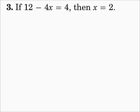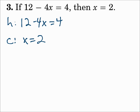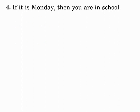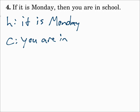Number three: if 12 minus 4x equals 4, then x equals 2. The hypothesis: 12 minus 4x equals 4. The conclusion: x equals 2. Number four: if it is Monday, then you are in school. The hypothesis: it is Monday. The conclusion: you are in school. Remember, 'if' is not a part of the hypothesis, and 'then' is not a part of the conclusion.